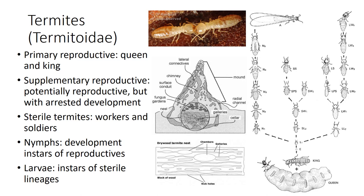All termites are eusocial. Unlike Hymenoptera, the castes of the hemimetabolous termites involve immature stages and equal representation of the sexes. Although both are nymphs, termitologists refer to nymphs as developmental instars of reproductives and larvae as instars of sterile lineages. Members of Termitidae differ from other termites by lacking symbiotic protozoa that secrete enzymes to break down the gut contents. Some use fungus to break down cellulose. They have an elaborate and rigid caste system. Termite queens undergo extraordinary physogastry, in which the abdomen is distended 500 to 1,000 percent its original size.